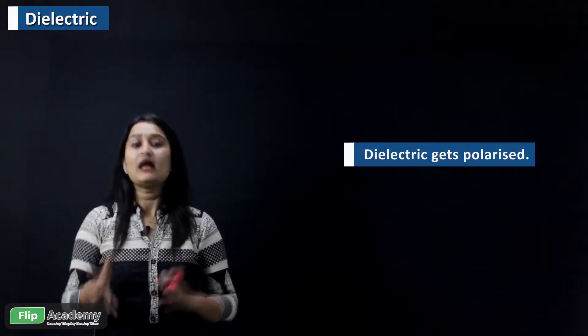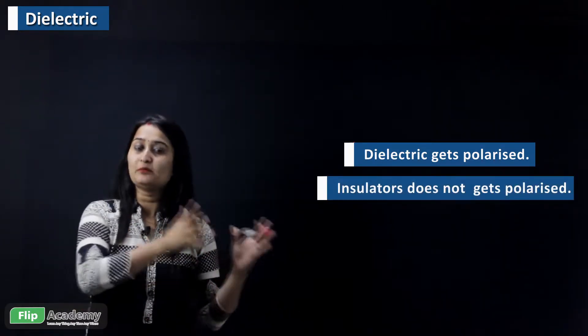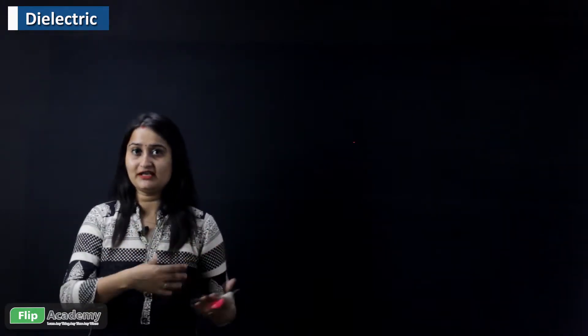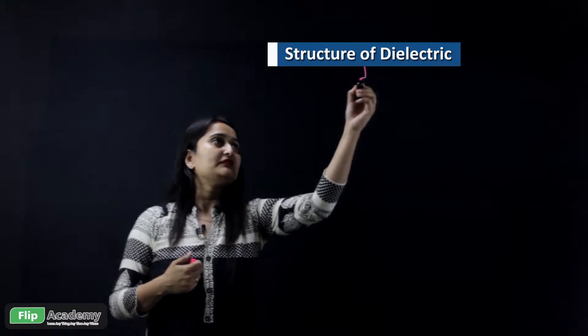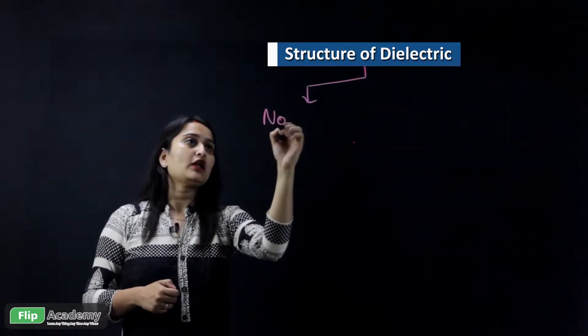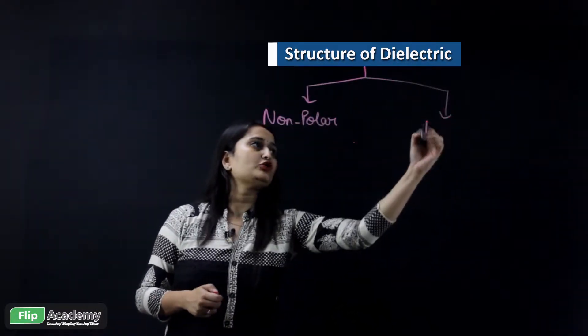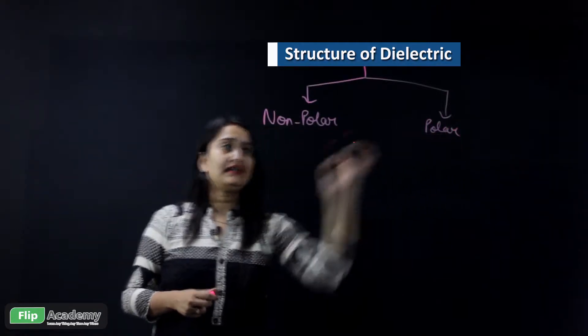The key difference involves a concept called polarization. We can say that a dielectric gets polarized while an insulator does not get polarized. Now, dielectrics are divided into two types based on their structure: the first category is non-polar dielectric and the second category is polar dielectric.